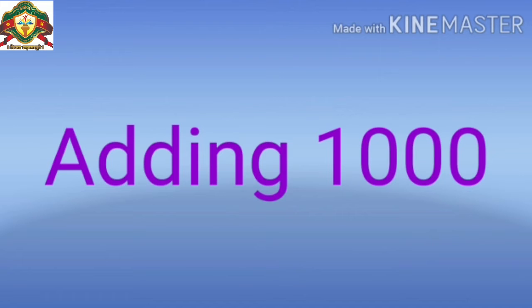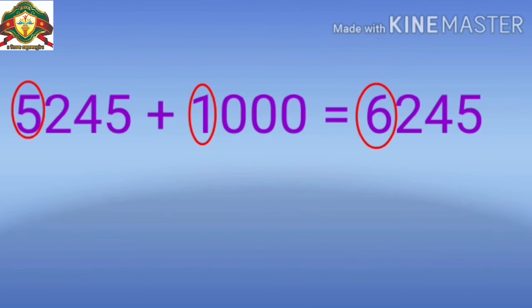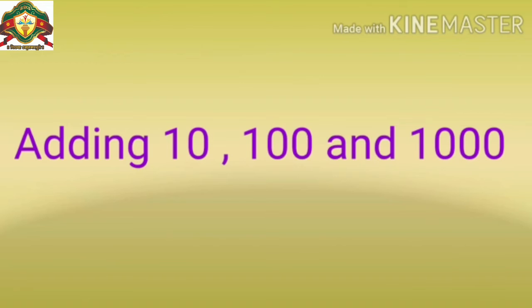And when we are adding 1000 to a number, then the value of digit at the 1000th place increases by 1. इससे आपको clear हुआ कि किसी भी number में यदि हम 10, 100 and 1000 add करते हैं, तो particular वो place जो होगी, वो change हो जाएगी।